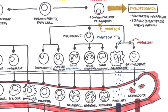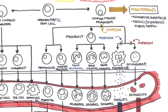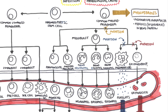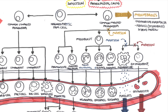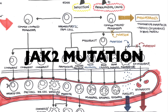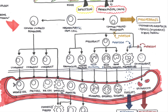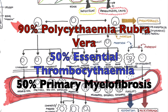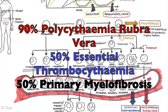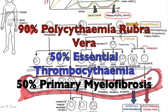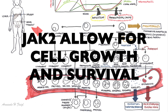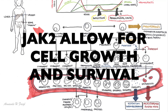Mutations along the myeloid progenitor cell pathway lead to these three myeloproliferative disorders. There are actually mutations shared amongst them — the JAK2 signaling pathway mutation. 90% of polycythemia rubra vera cases have a JAK2 mutation, and more than 50% of essential thrombocythemia and primary myelofibrosis also have a mutation in the JAK2 gene, which provides instructions for making a protein that promotes cell growth and division.